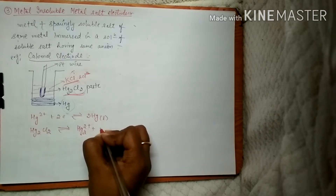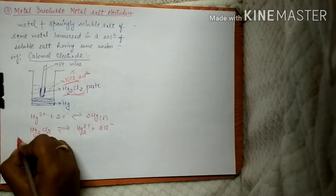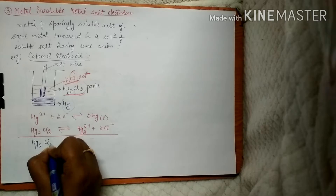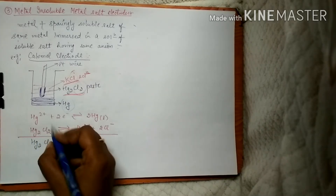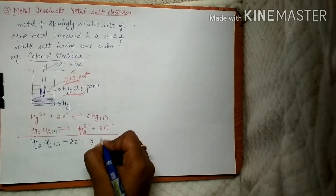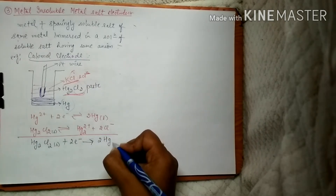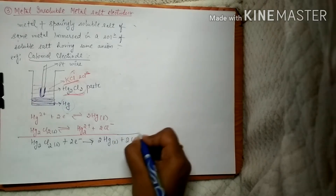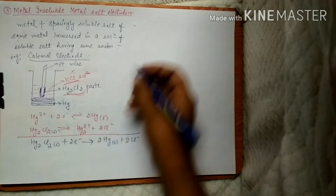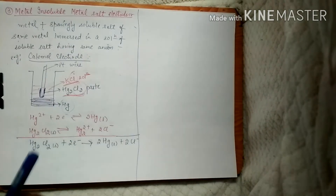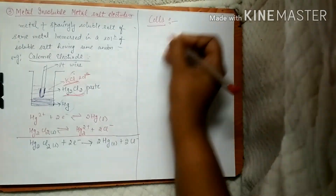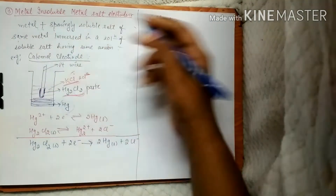Mercury is in liquid state here — always remember that. Next, the Hg2Cl2 paste shows the reaction: Hg2²⁺ + 2 Cl⁻. The net cell reaction is: Hg2Cl2 (solid) + 2e⁻ → 2 Hg (liquid) + 2 Cl⁻. This is the net cell reaction, and this is your third type of electrode.